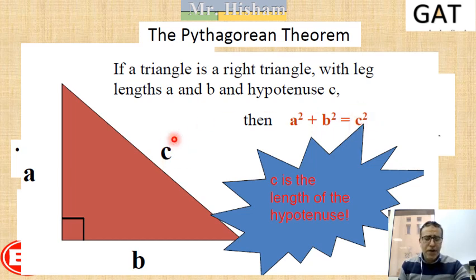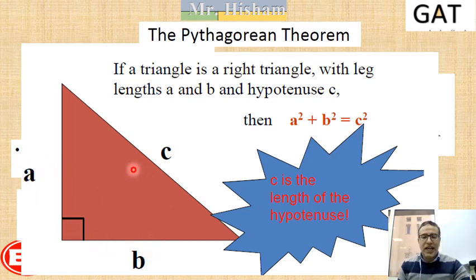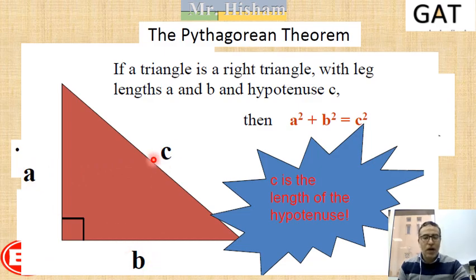The area of the square drawn on the hypotenuse is equal to the sum of the areas of the squares drawn on the legs. Or simply: leg squared plus leg squared equals hypotenuse squared.